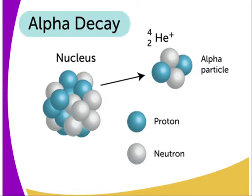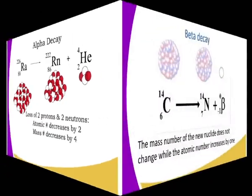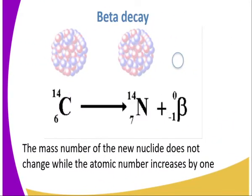Alpha decay occurs when the nucleus emits an alpha particle, and therefore the number of protons and neutrons change. The alpha particle has mass number 4 and atomic number 2, so the new nuclide formed decreases by those numbers. For example, radium with atomic number 88 and mass number 226 undergoes alpha decay, losing 2 protons and 2 neutrons, so the atomic number decreases by 2 and the mass number decreases by 4.